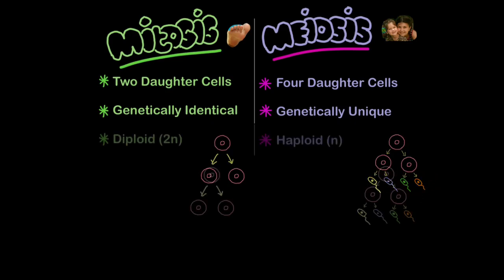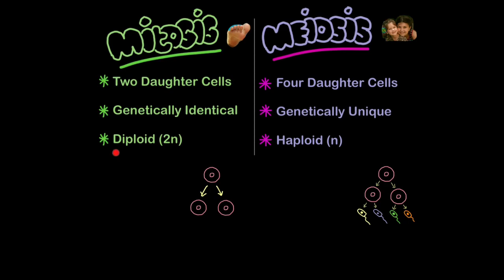In mitosis, the cells produced are diploid. That means they contain two sets of chromosomes, 46 or 23 pairs. Whereas in meiosis, the cells are haploid. They contain half the number of chromosomes. So not 23 pairs in each cell, just 23 chromosomes.